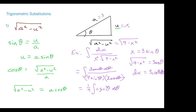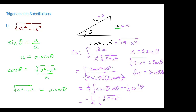After cancellation we're left with (1/9) times 1/sin² θ — and that's csc² θ. The integral of csc² θ is negative cotangent. Now, like all substitutions, since we started with x we need to get back to x. Cotangent is adjacent over opposite from our triangle, giving us -(1/9) · √(9-x²)/x + C.